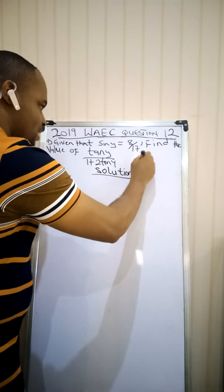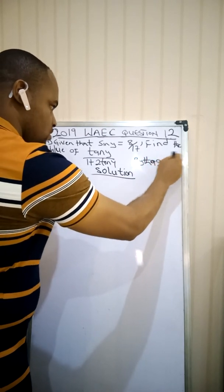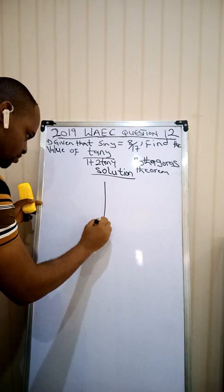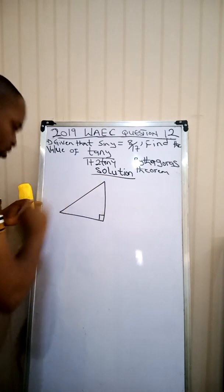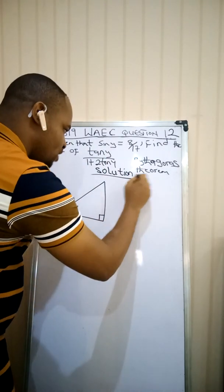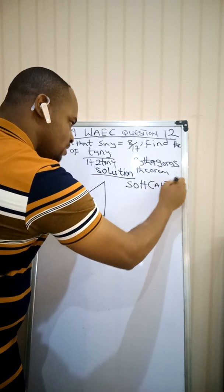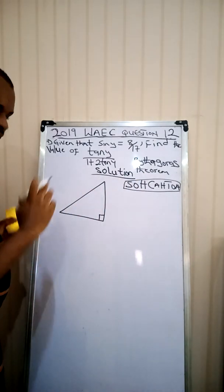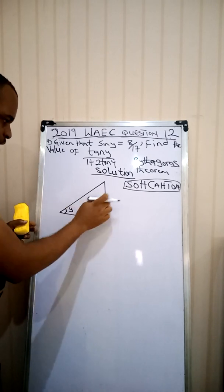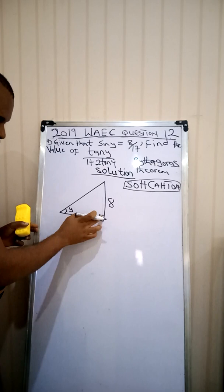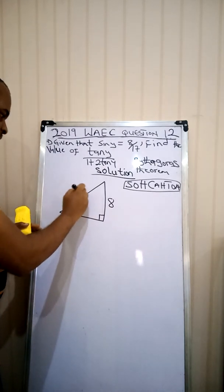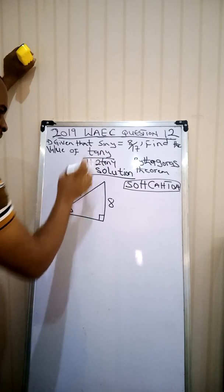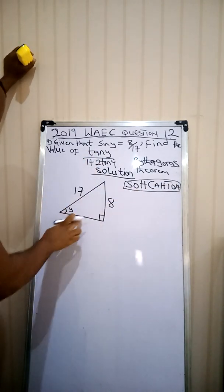In this question, we are going to be applying the Pythagorean theorem. To apply the Pythagorean theorem, remember it only applies to a right angle triangle. Remember SOHCAHTOA — sine is opposite over hypotenuse, and your opposite is the side facing the angle. We are given angle Y, so the side facing Y will be my opposite. The opposite is 8, and the side facing the right angle — the hypotenuse — is 17. I need the adjacent side because tan is opposite over adjacent.